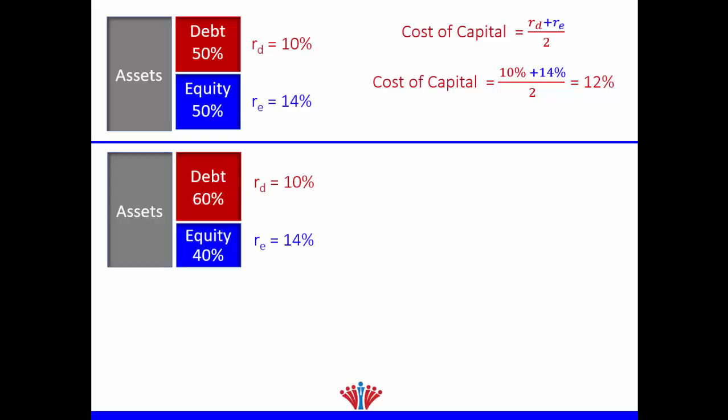Let's look at another example with the same company, but now the percentage of debt is not the same as equity. Here we have 60% debt and 40% equity, which is more realistic. We still have the same cost of debt and cost of equity. So to find the cost of assets, or cost of capital, can we still use the simple average? Of course not, because we have different weights.